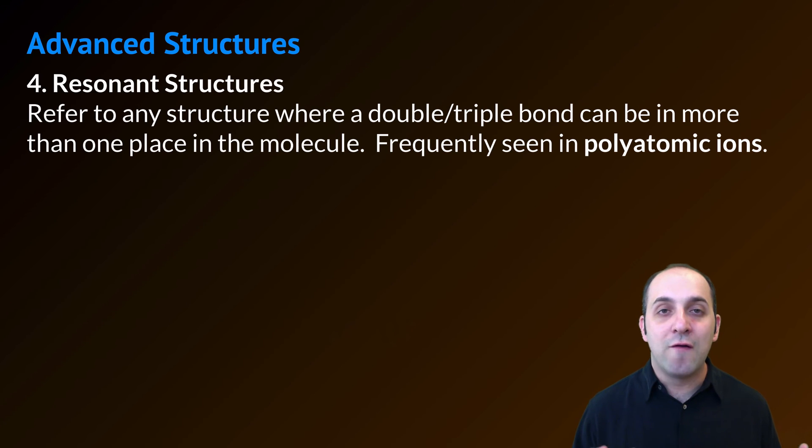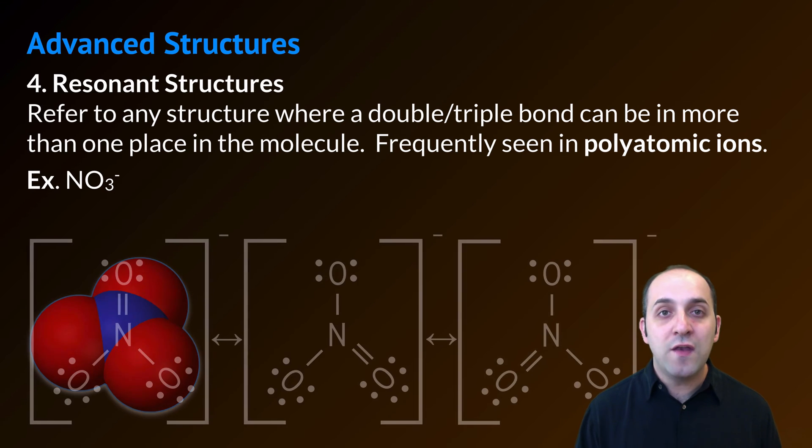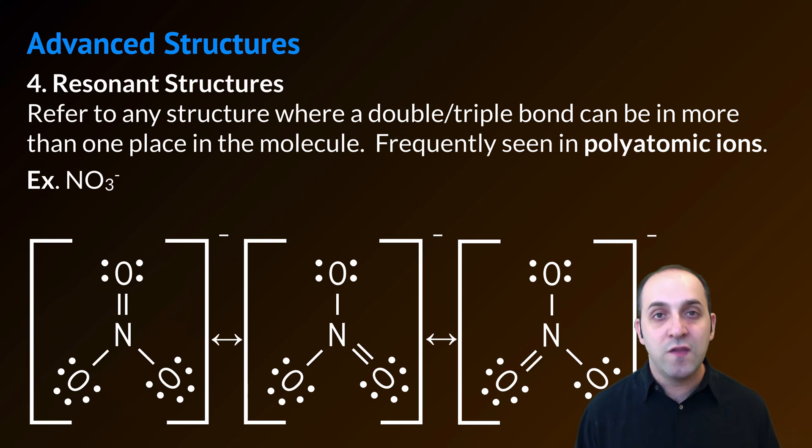Our last example is what is called a resonant structure. This refers to any structure where a double bond or a triple bond could be in more than one place in the molecule. We frequently see this in polyatomic ions. Our example is going to be the nitrate ion. When we draw the nitrate ion, we can put the double bond between the nitrogen and the oxygen on any of the three oxygen atoms that nitrogen is bonding with. As a result, we draw them all as possible structures and we connect them with these double-sided arrows. Testing of the bond characteristics in a nitrate ion has actually demonstrated that the bonds between nitrogen and oxygen have intermediate characteristics between being a single and a double bond simultaneously.